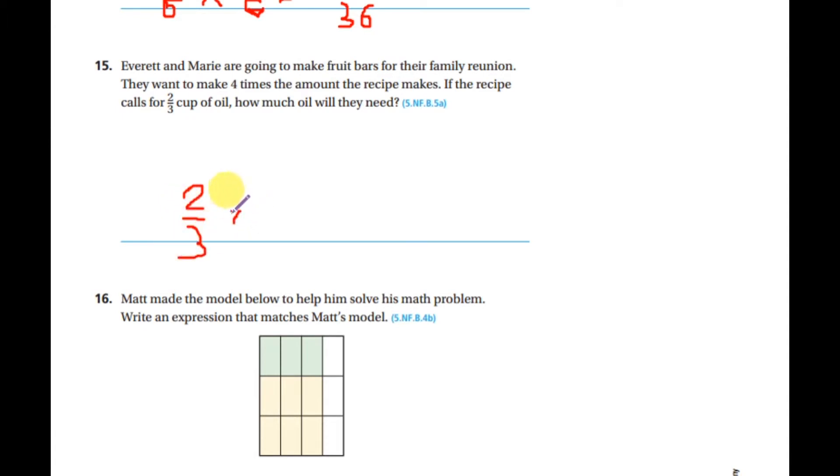The recipe needs four amounts. Let's multiply. Of course we have here a whole number, its denominator is one. Now let's multiply.